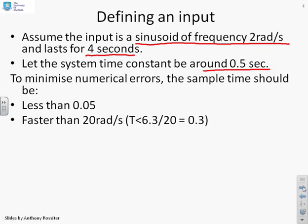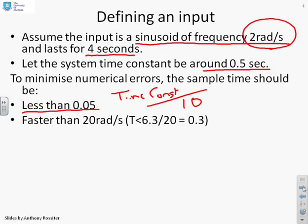Now in order to minimize numerical errors, the sample time for the input is going to have to be less than about 0.05, and you'll notice that's the time constant divided by 10. Now indeed you could divide by a number greater than 10, so that's why I'm saying the sample time must be less than 0.05. So sample at least 10 times as fast as the principal time constant of the process. Also we need to know about the input signal. How fast is the input signal changing? Well we said the input signal was a frequency of two radians per second, so really again we need to sample at least 10 times as fast, which is 20 radians per second.